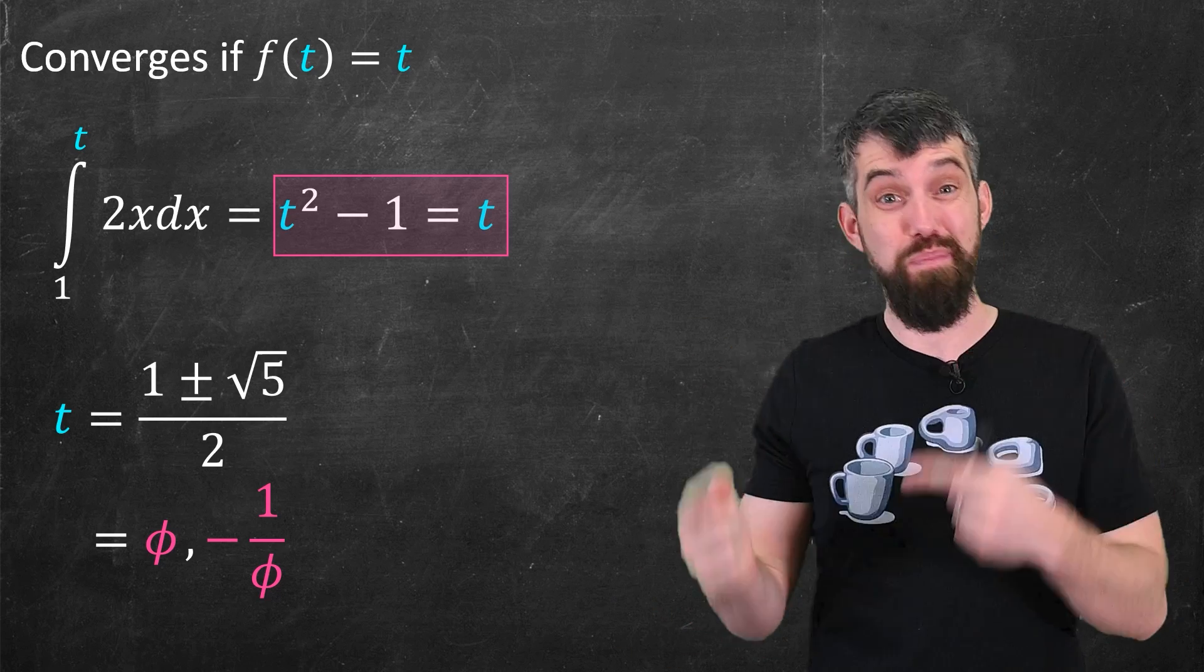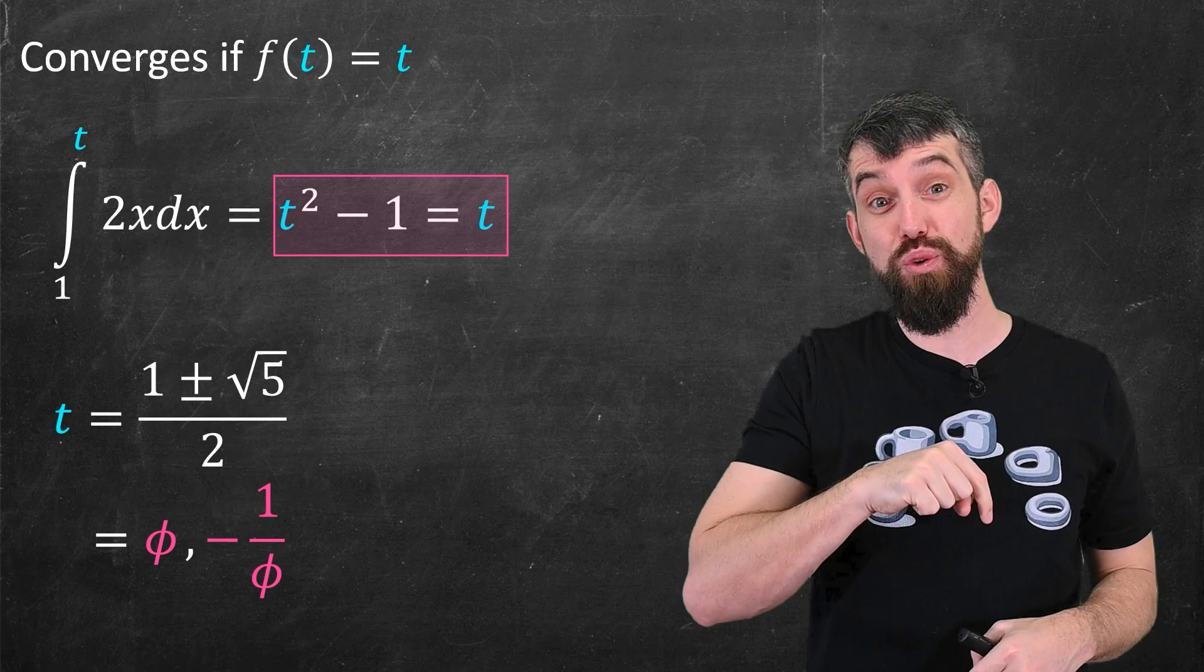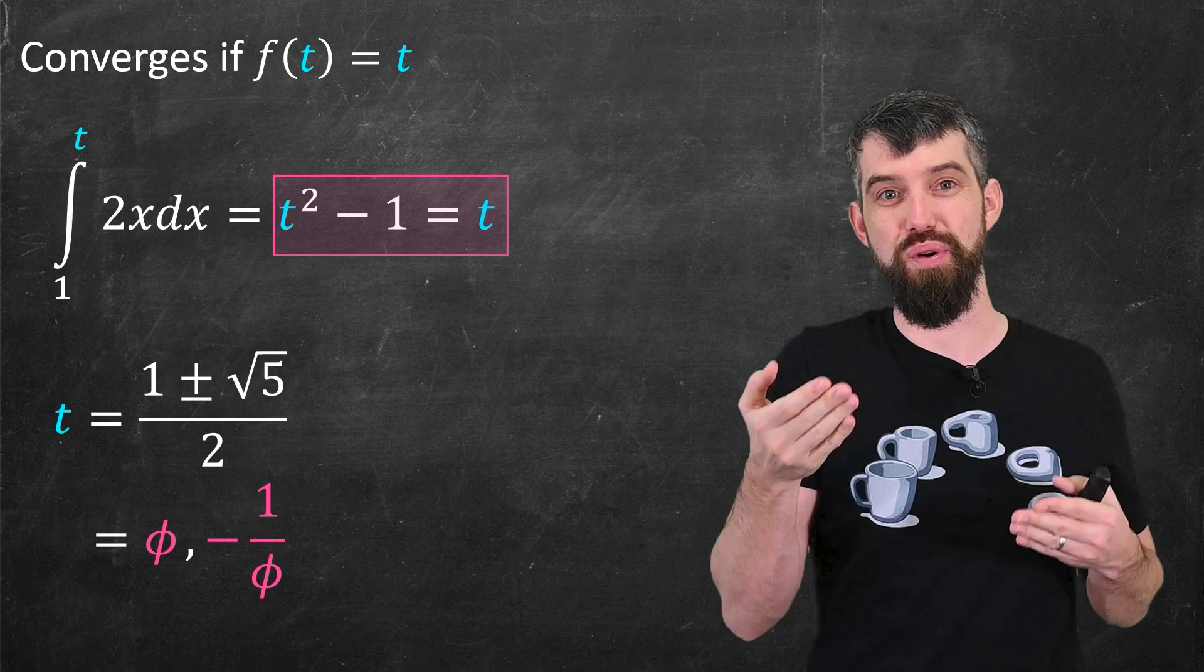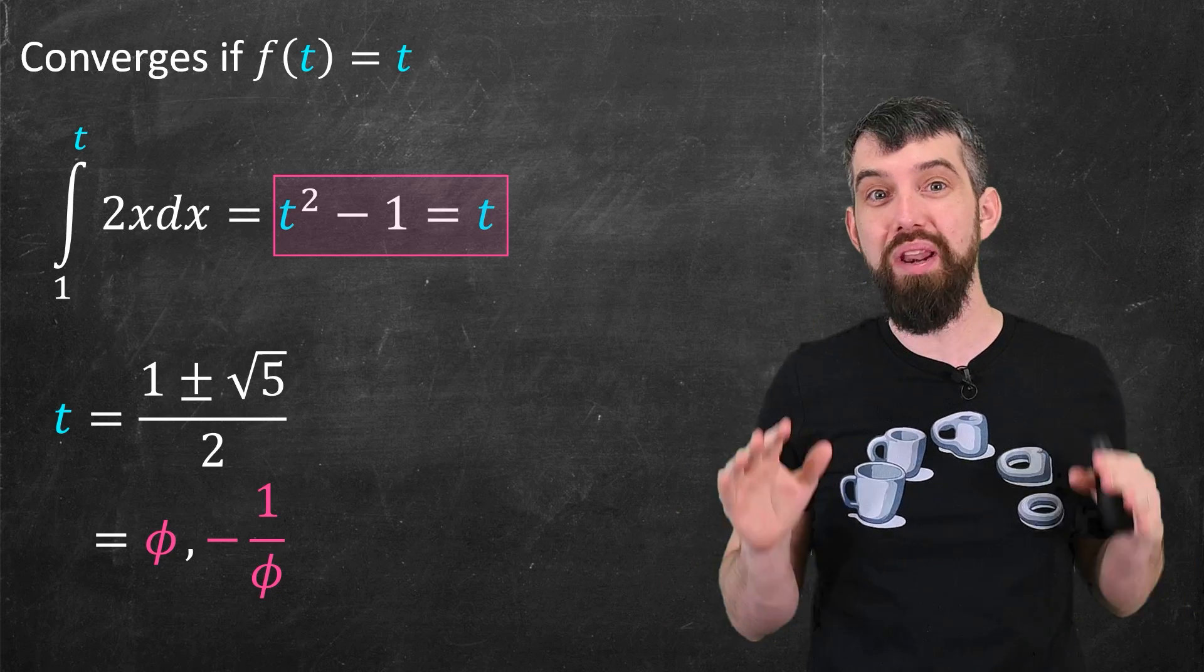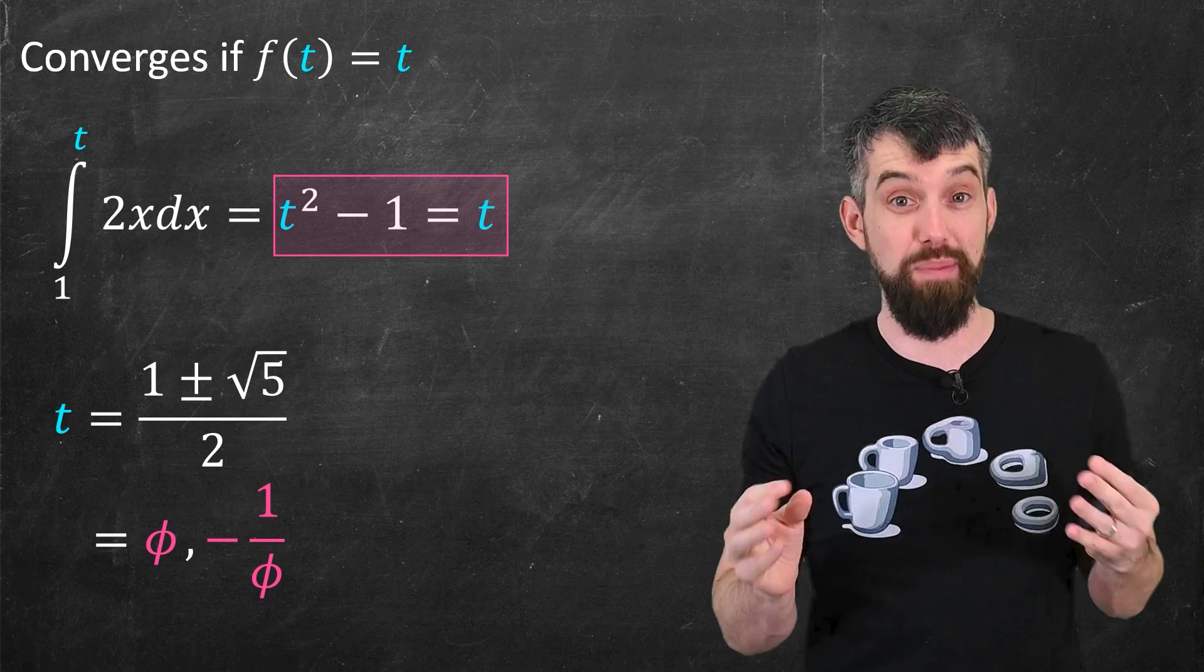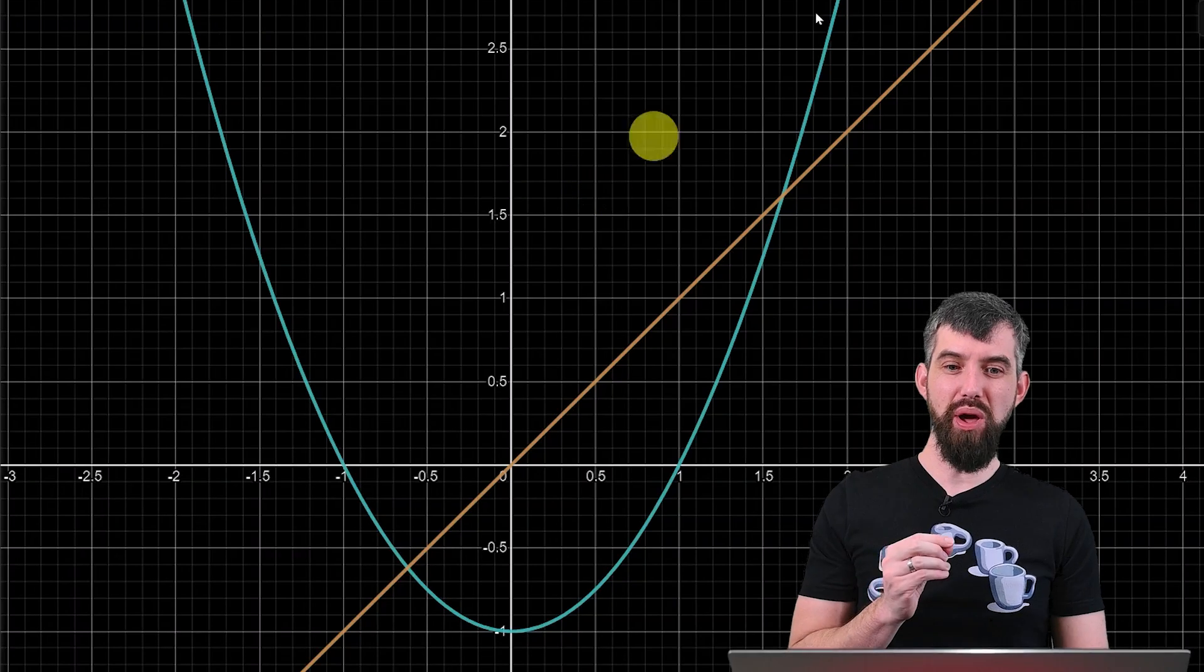And then the negative root, with just a bit of algebra, you can do it down in the comments if you wish. It's just negative one over the golden ratio. And the golden ratio is used throughout mathematics. It has so many fascinating applications, and it's just kind of cool that it pops up in this scenario.